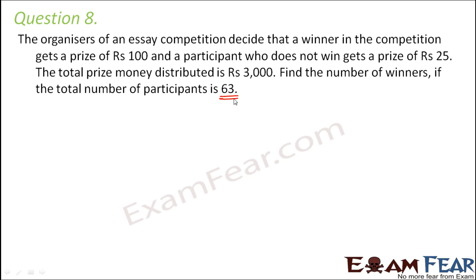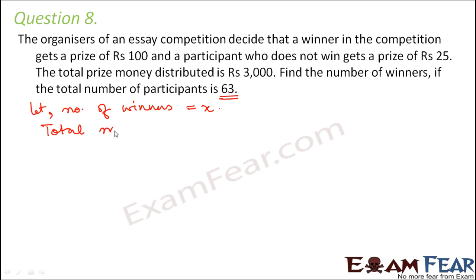So this 63 is the total number. Out of these 63, few were winners and the remaining got Rs. 25 because all of them got something. Those who won got Rs. 100 and those who did not win got Rs. 25. So we have to decide how many out of 63 were winners. Let us say the number of winners is x. For each winner the amount given was Rs. 100, so for x winners the amount would be 100x.